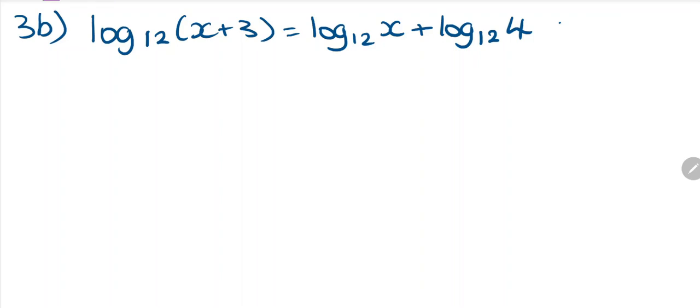For another equation, we're going to use the one-to-one property again. We'll have log base 12 of x plus 3, and if we write this as 12 using the product property, this is going to be x times 4, which is 4x. So I'm going to write it like this: log of 4x.